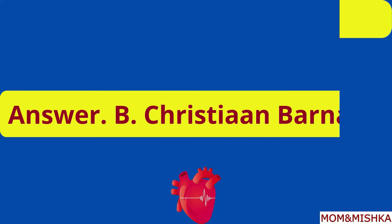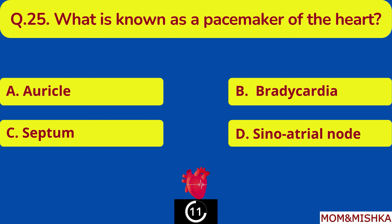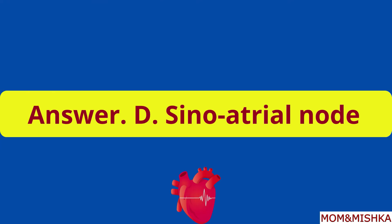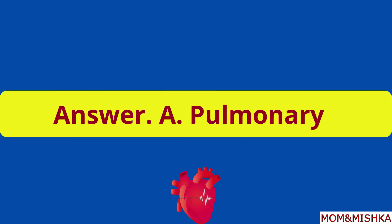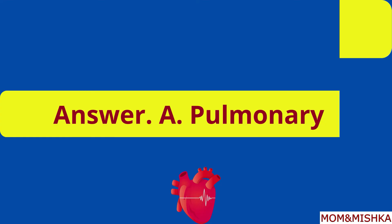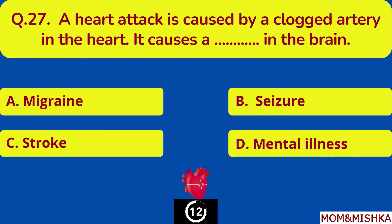What is known as the pacemaker of the heart? The sinoatrial node. Blank veins are blood vessels that carry oxygen-rich blood from your lungs to your heart — pulmonary veins.